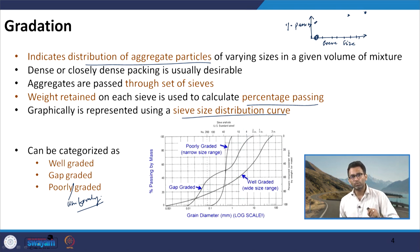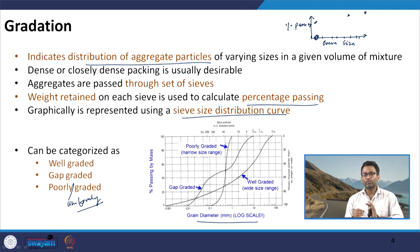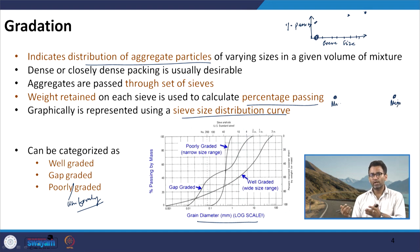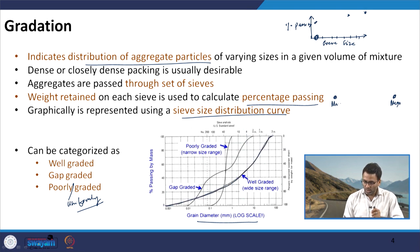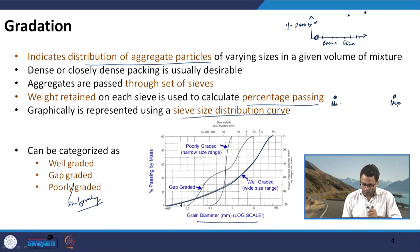This sieve size distribution curve is usually plotted on a semi-log graph where the y-axis is percentage passing on an arithmetic scale and the x-axis is grain size on a log scale. Looking at three distinct curves: a smooth running curve between the minimum and maximum size, going almost through the middle of the graph, represents a well graded structure — meaning aggregates of different sizes are continuously present.